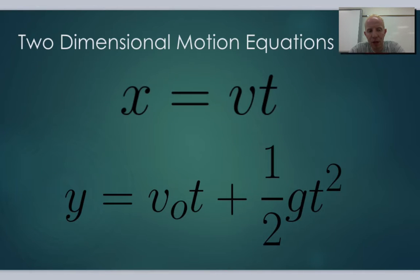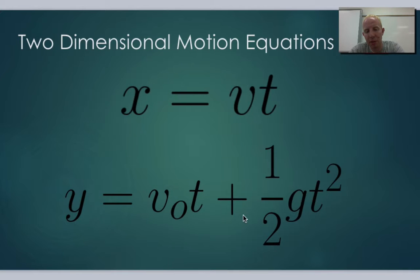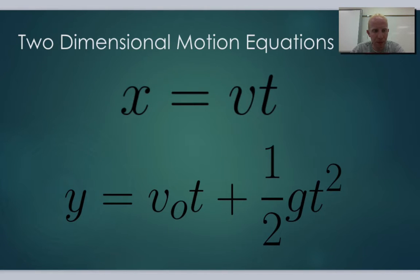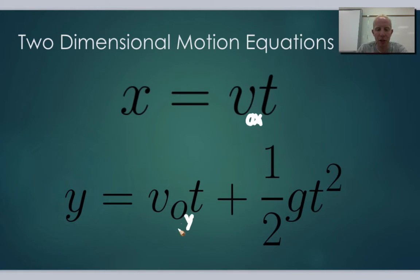Looking at our equations: x equals v times t stays the same from horizontal launches. But for angled launches, we need to consider the vertical component: y equals v₀t plus ½gt². We have this extra vertical term because now we're launching in the vertical direction. To be consistent, the v in x equals vt is really v₀x, and the v₀ in the vertical equation is really v₀y.